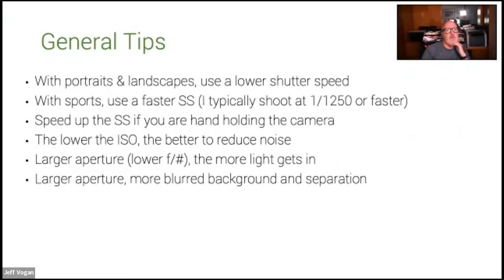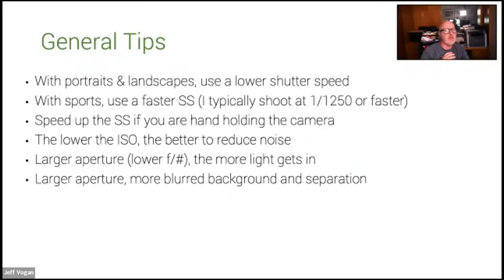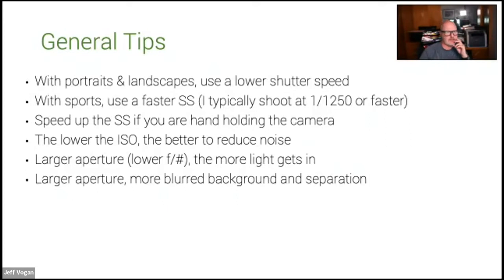General tips: with portraits and landscapes, use a lower shutter speed to allow a lower ISO since they're typically standing still. For sports, use a faster shutter speed — I typically shoot at 1/1250th or faster. Lower the ISO to get better image quality with less noise or grain. A larger aperture, meaning a lower F number, lets in more light and gives a more blurred background.